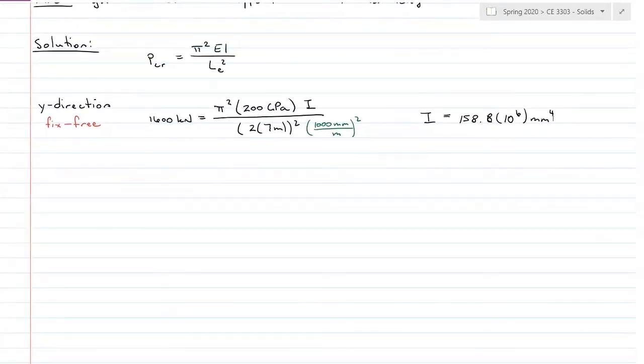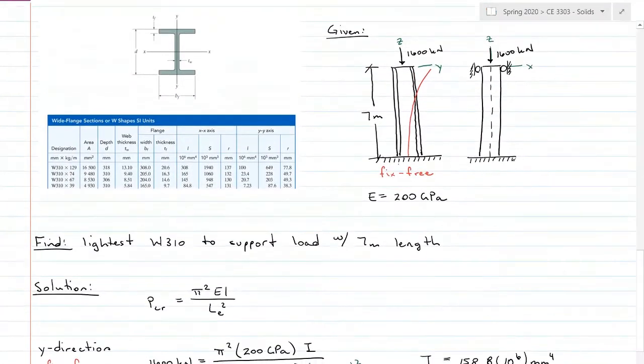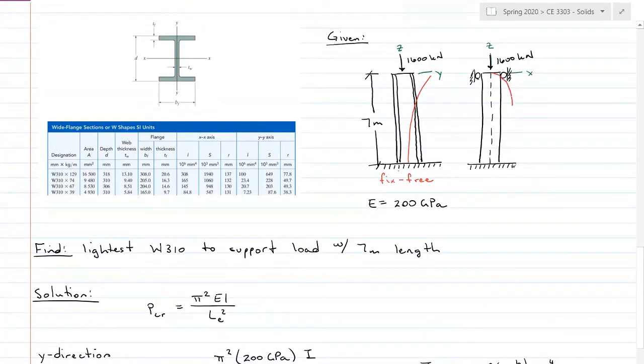I'm going to solve for my X direction next. And my X direction is going to be bending in this XZ plane, which means it's going to have this shape, which is a pin fixed. It's not a pin, it's a roller.